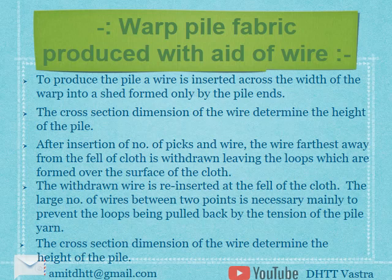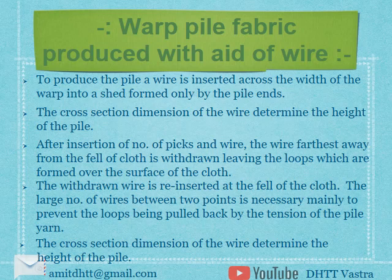The cross-sectional dimension of the wire determines the height of the pile. Loop pile is formed if plain wires are used, and cord pile is formed if the wire has a cutting blade at its tip. Both types are produced in the same way. Warp pile fabrics can be produced in two ways in the loom: first, wire inserted alone; second, insertion of wire and a pick simultaneously using the twin shade technique.